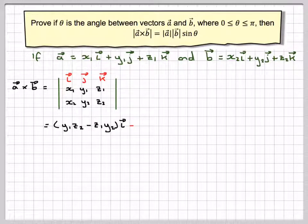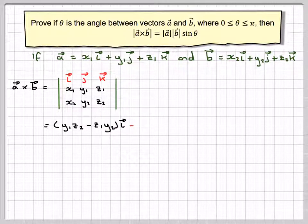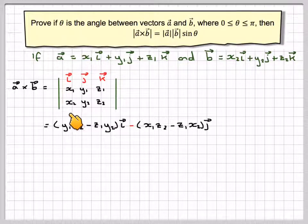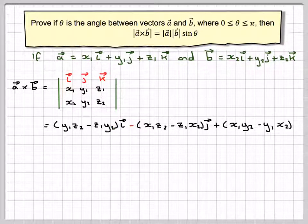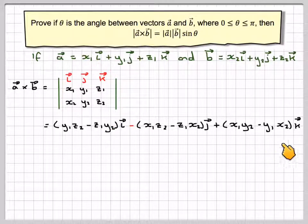Always minus the next one — covering up the second column you get minus (x1·z2 minus z1·x2)j. And then the last component, you get (x1·y2 minus y1·x2)k.